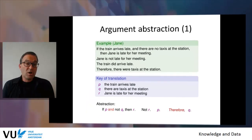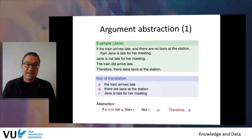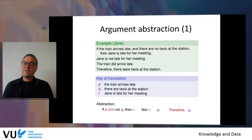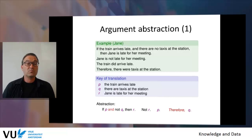Let's look at an example from the real world and how we can go from a real-world situation to an abstraction so that we can apply logical reasoning. Jane arrives by train late and there are no taxis at the station. If this is the case, then Jane will be late for her meeting. But we also know that Jane is not late for her meeting, even though the train did arrive late. Therefore, human beings can conclude that there were taxis at the station. This is the kind of reasoning we want to formalize so that computers can apply it too.